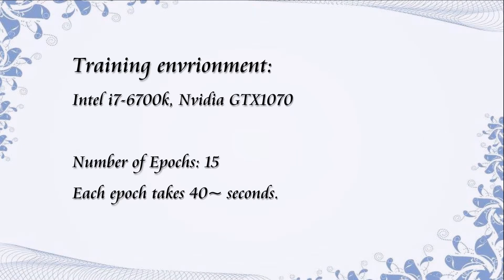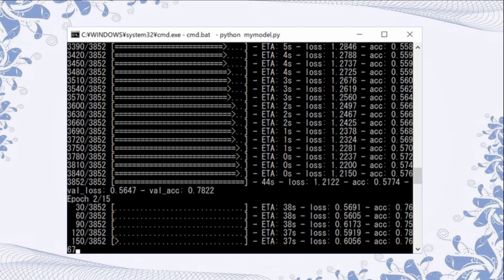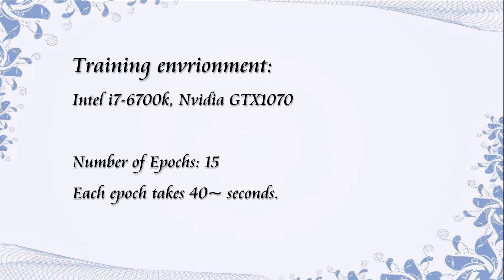As there are many parameters to train, using a CPU would be too slow for this large model. Therefore, we utilize a modern GPU to train our model. In our training environment, an NVIDIA GTX 1070 is used. The total number of epochs is 15, and each epoch takes around 40 seconds, so we are able to train our model in around 10 minutes.